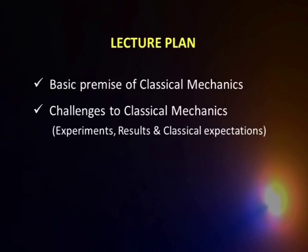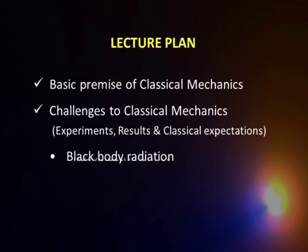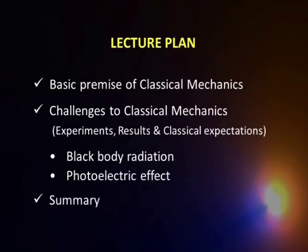We will try to have a look at them. In this process I will take up two such important experiments: black body radiation and photoelectric effect in today's episode. We will try to see what were the experiments, what kind of results were obtained, what were the classical predictions for those experiments, and how the two were mismatching. We will try to see that classical mechanics is inadequate to explain these results, and towards the end we will sum up what we learned in today's session.